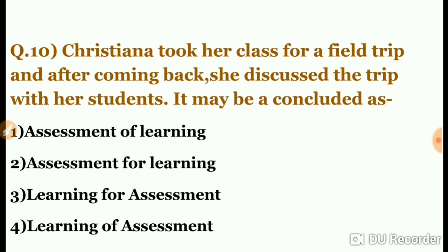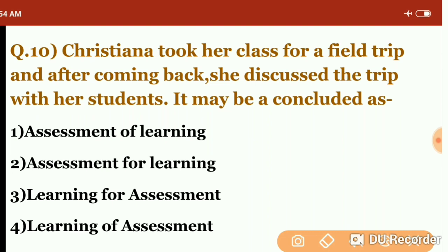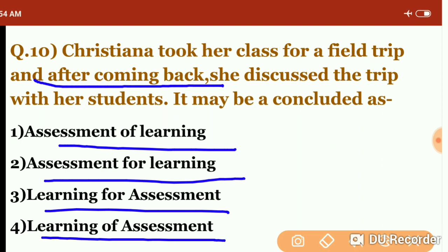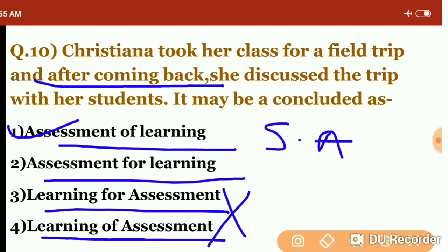Question ten: Christiana took her class on a field trip and after coming back discussed the trip with her students. What type of assessment is this? The options are: assessment of learning, assessment for learning, learning for assessment, or learning of assessment. Since the discussion happened after coming back — after the event — this indicates summative assessment. The answer is 'assessment of learning,' because it occurs at the end rather than during the process.